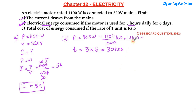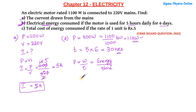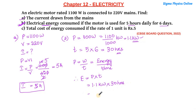We have the power in kilowatts and the time in hours. The formula is: power equals energy divided by time, so energy equals power multiplied by time. Here we are talking about electrical energy, so electrical energy equals power into time: 1.1 kilowatts multiplied by 30 hours.